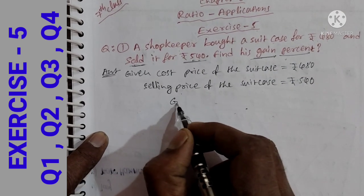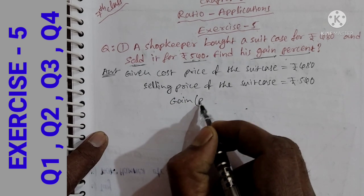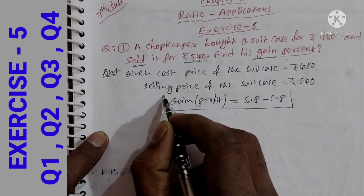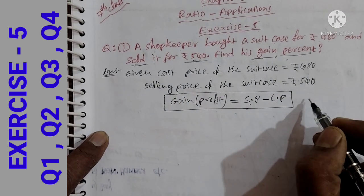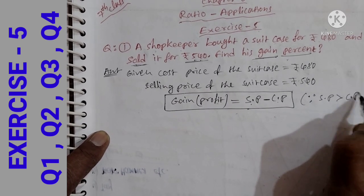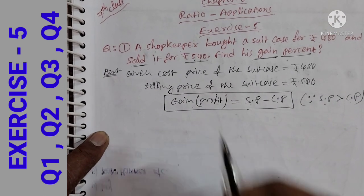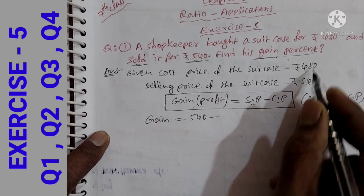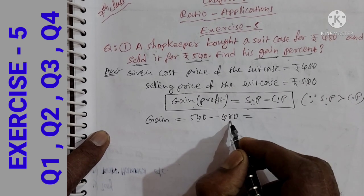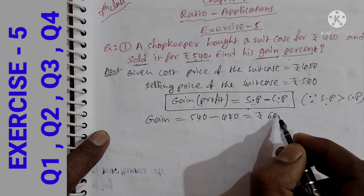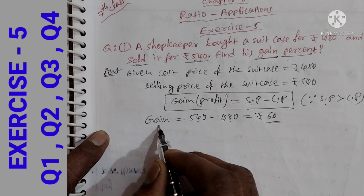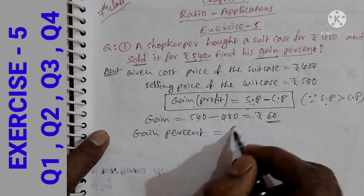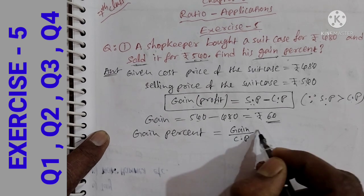The selling price is greater than the cost price, so there is a gain. Gain is equal to selling price minus cost price, that is 540 minus 480, which equals Rs. 60. So the profit is Rs. 60. Now we calculate gain percentage. The formula is: gain percentage = gain divided by cost price, multiplied by 100.